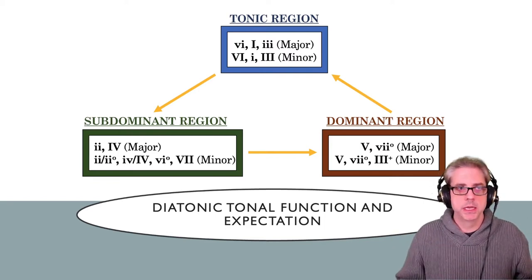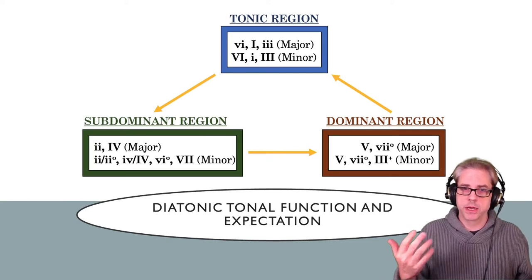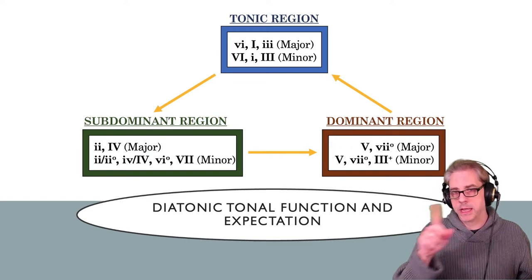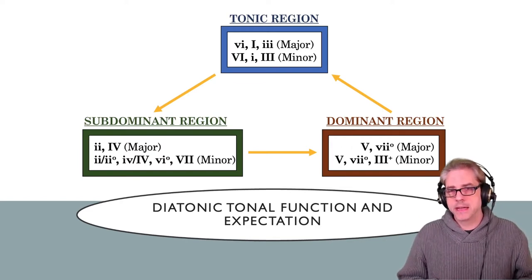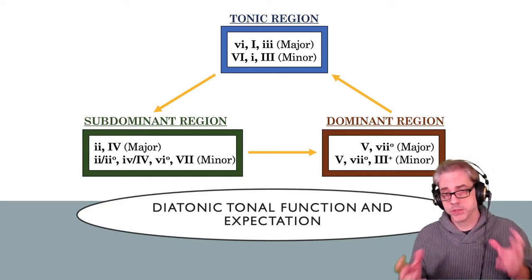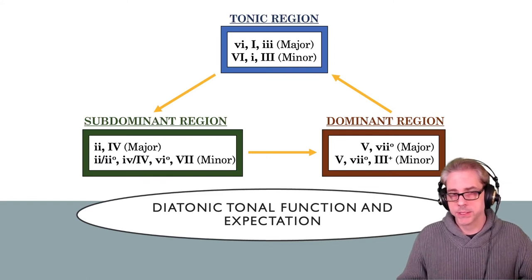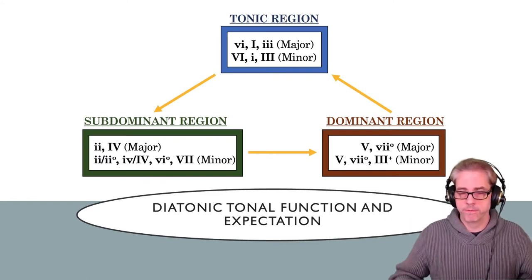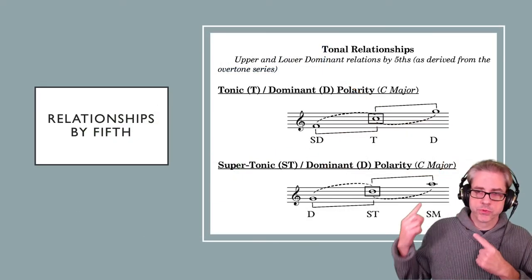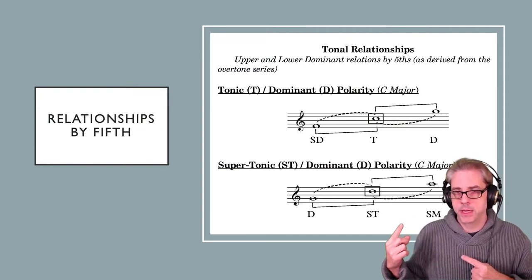Generally speaking, in tonal music we have three regions: tonic, subdominant — also sometimes called predominant — and dominant. They tend to move in a counterclockwise fashion if you imagine the circle of fifths. Generally speaking, chord progressions in tonal music move counterclockwise in terms of the flow, which is why I have the arrows moving in that direction.